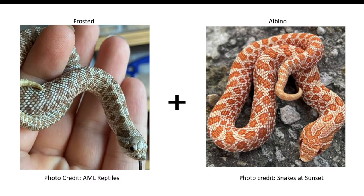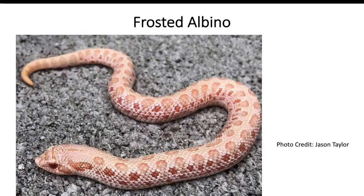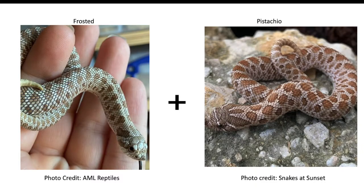Earlier I showed you what the caramel albino, or ultramel, looks like. Now let's combine the frosted — caramel hypo — with albino. This snake is a visual three-recessive-gene animal. When you combine these three genes you get a frosted albino, and I love the pattern on this snake — it looks like it has a tiger pattern.